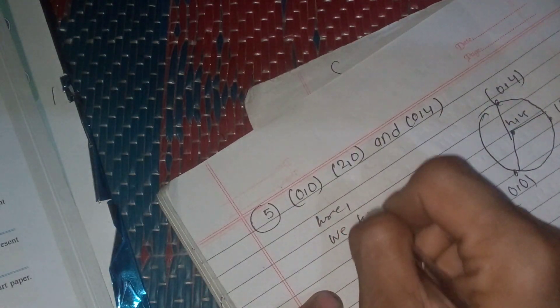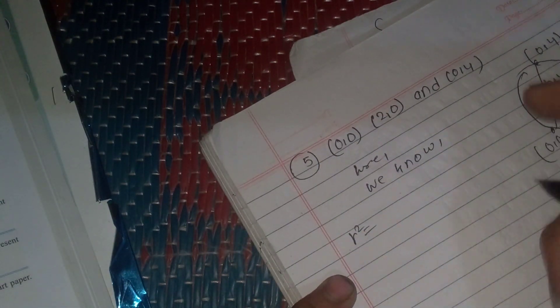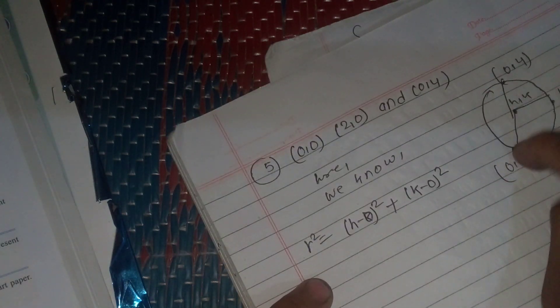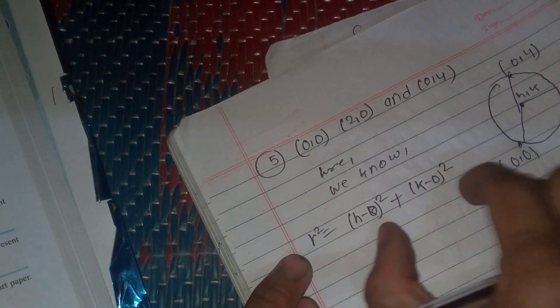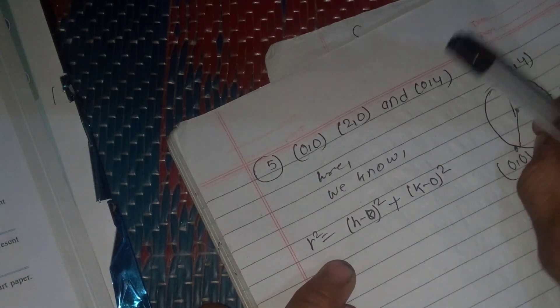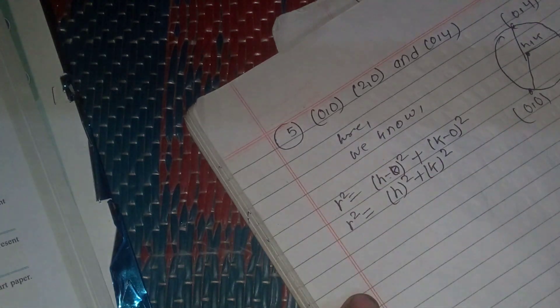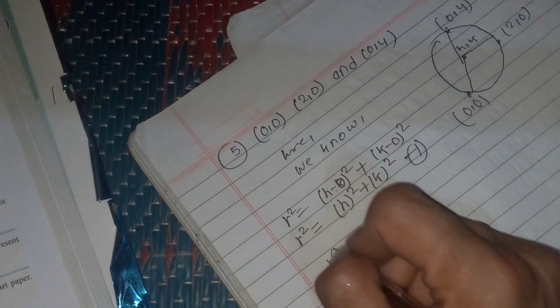We know that r squared equals radius squared. Using the distance formula: (h minus 0) squared plus (k minus 0) squared equals r squared, which gives h squared plus k squared equals r squared.